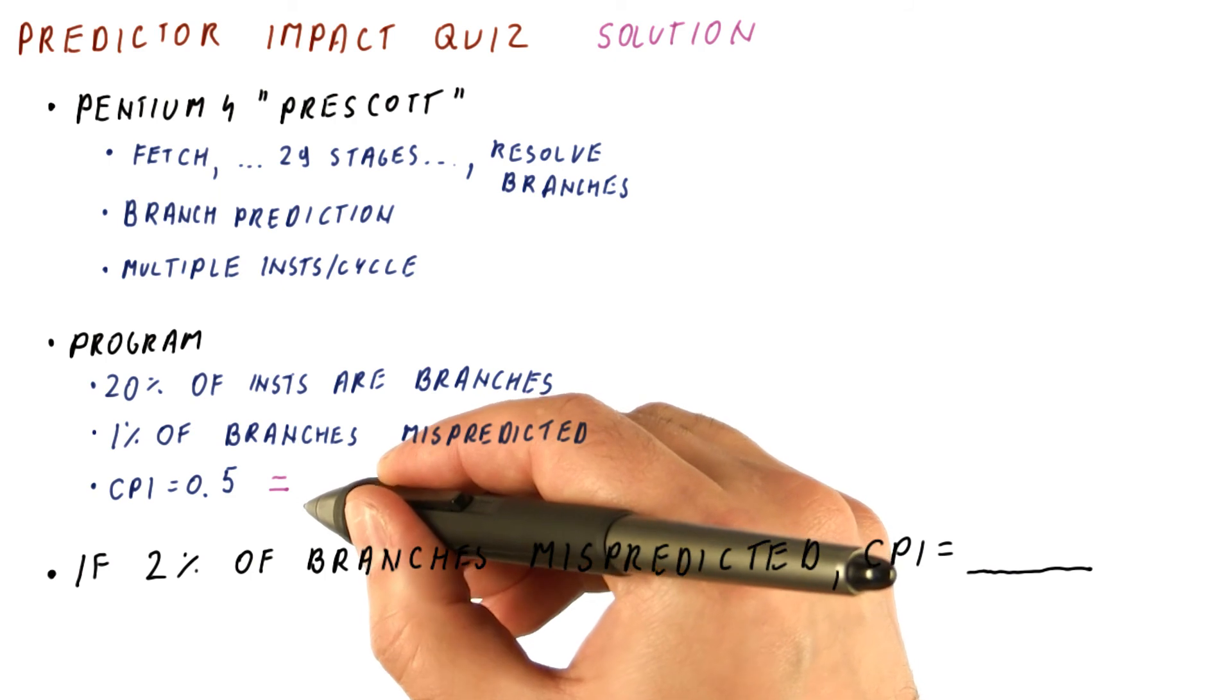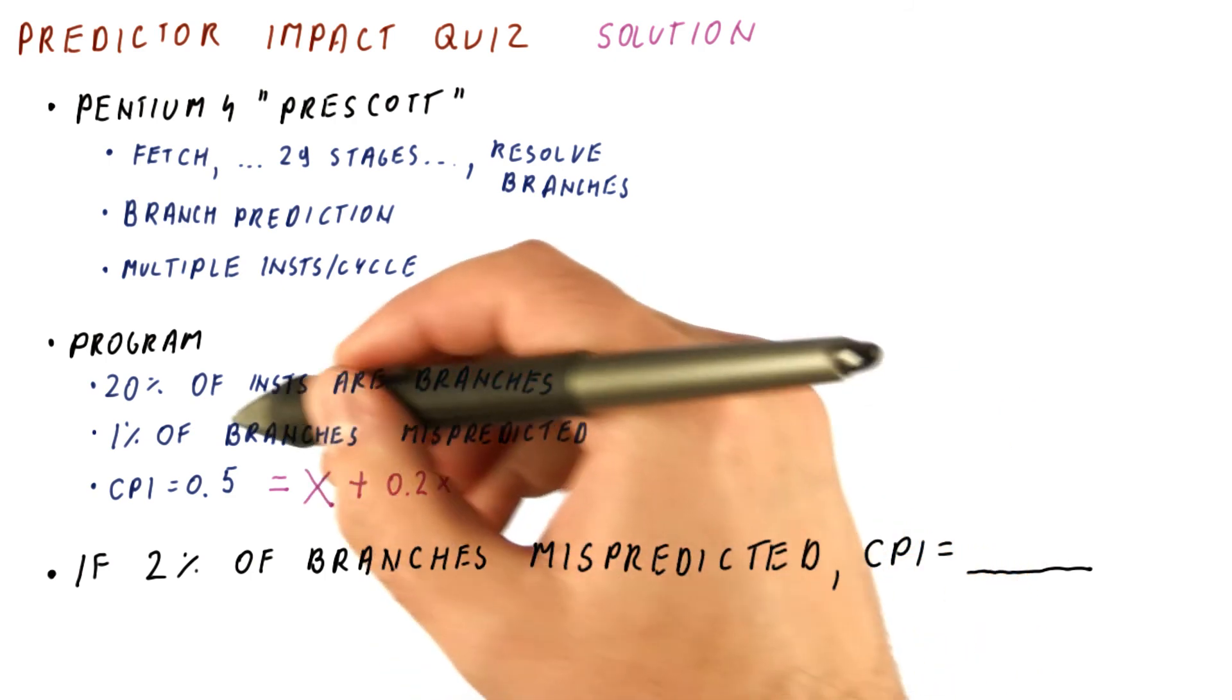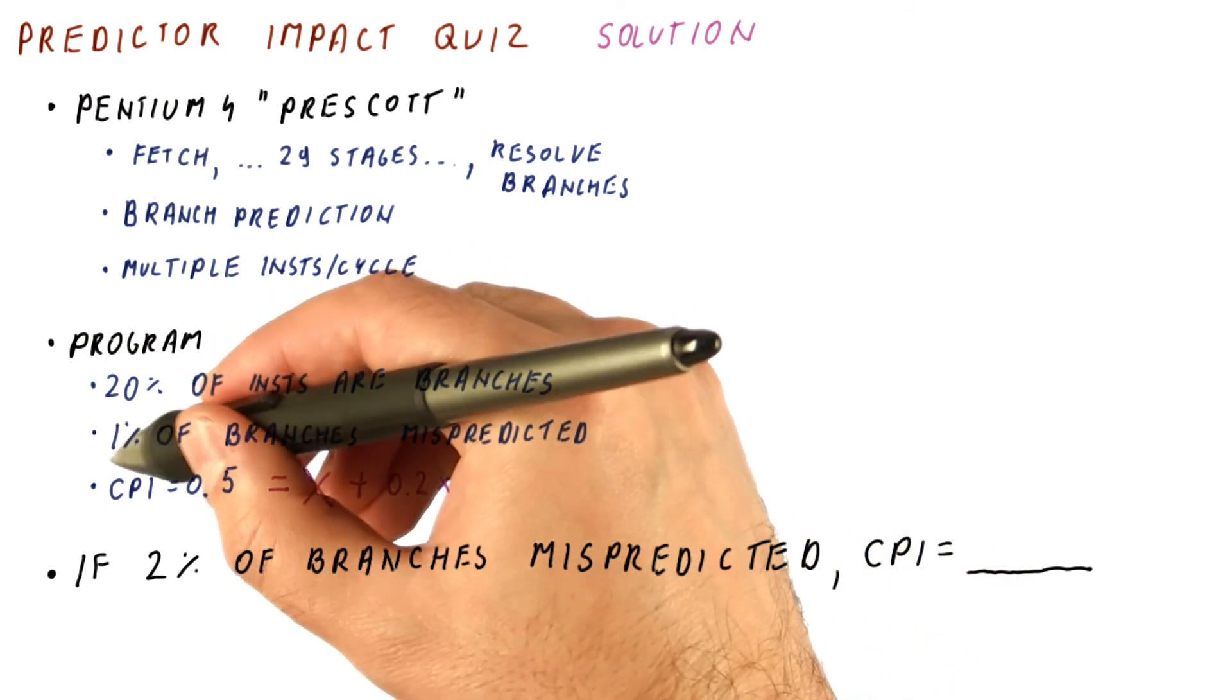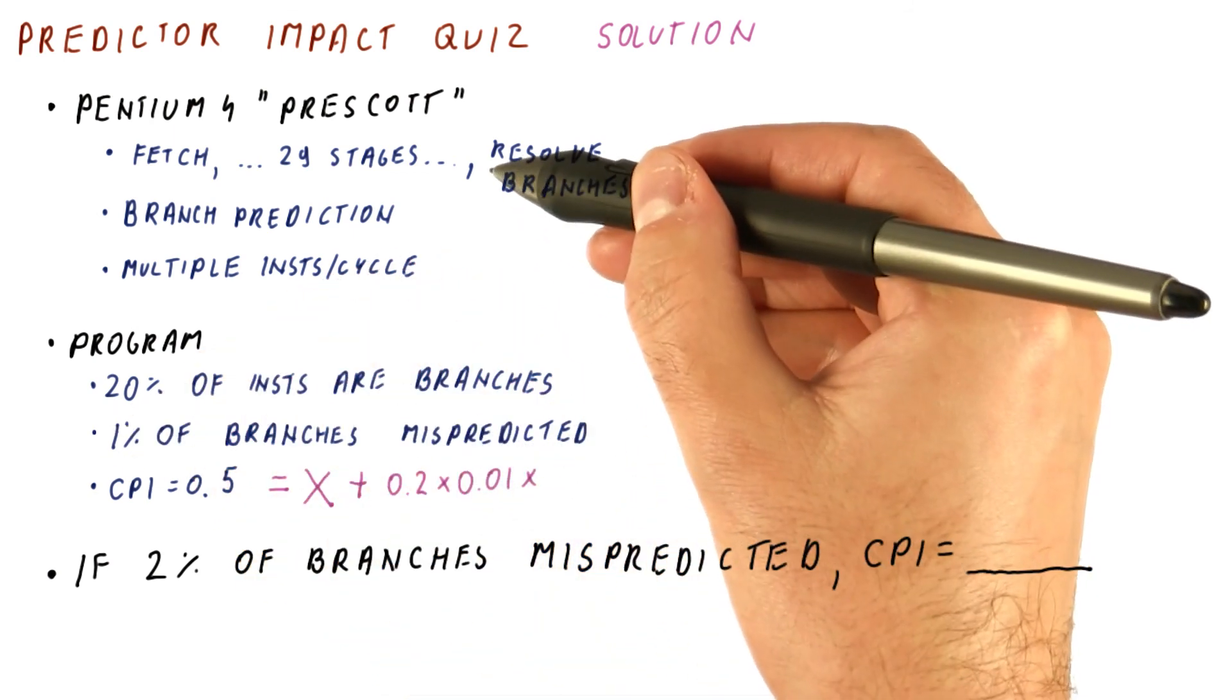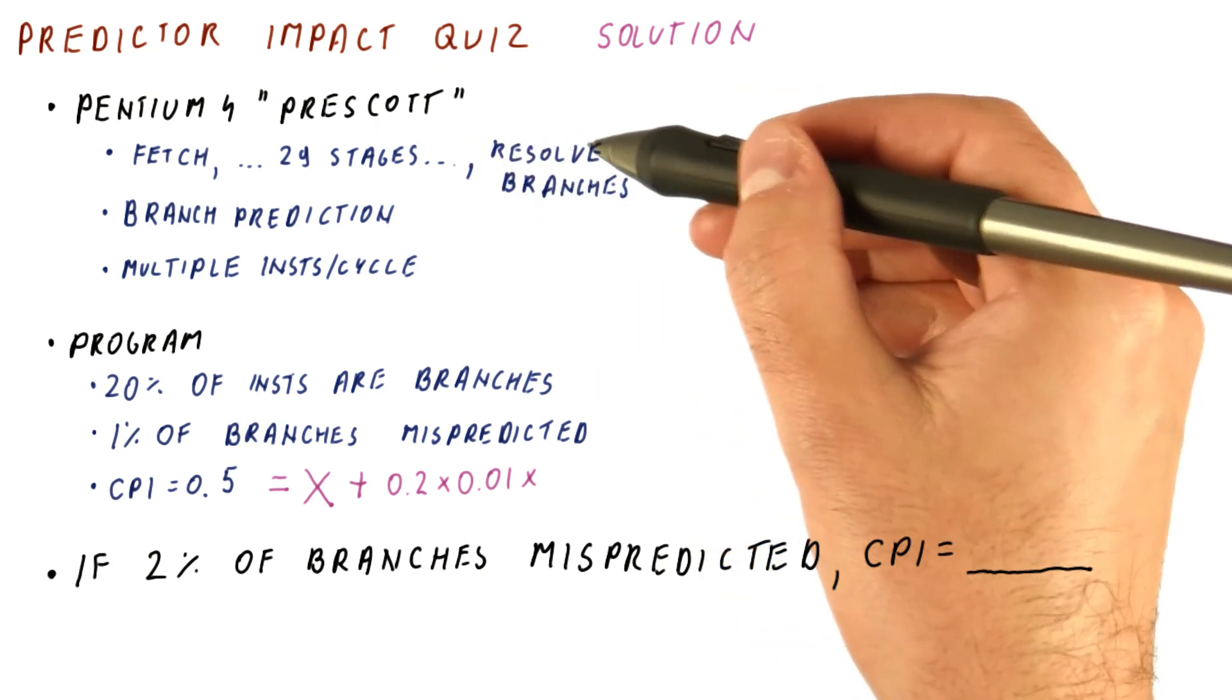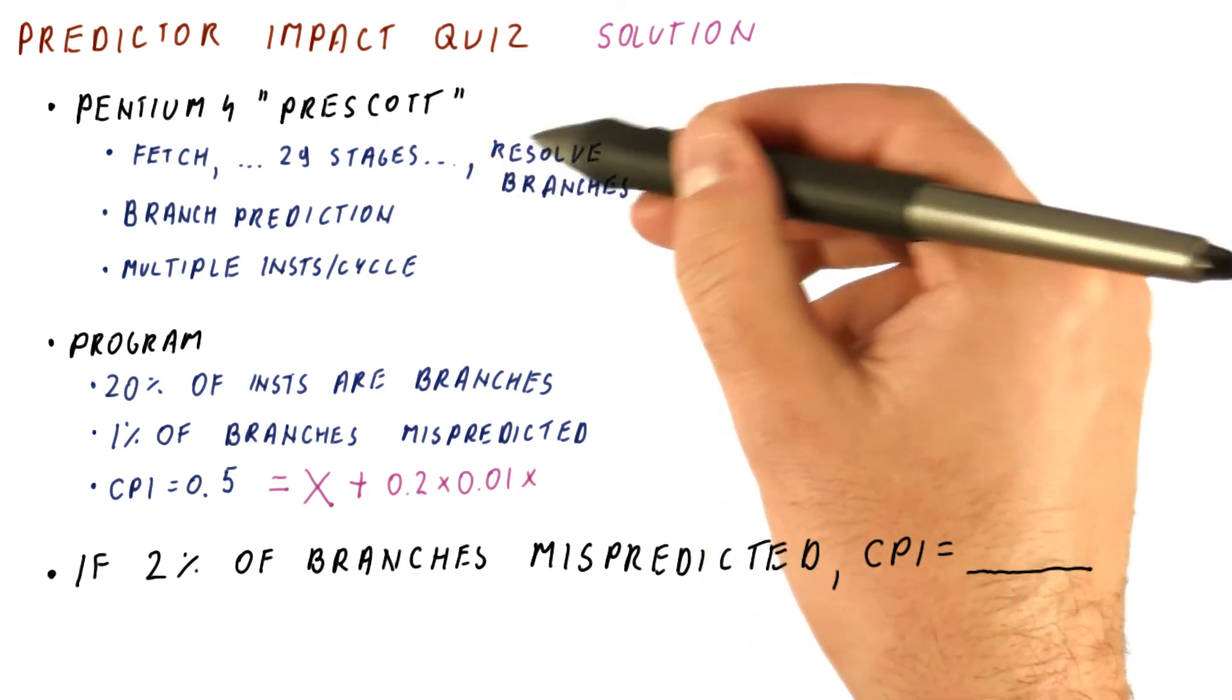In this CPI, we're getting some ideal CPI plus, for branches that we mispredict 1% of the time, we pay a 30 cycle penalty because we resolve branches in the 31st cycle.